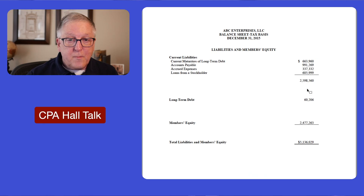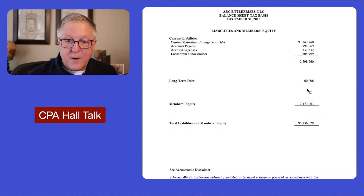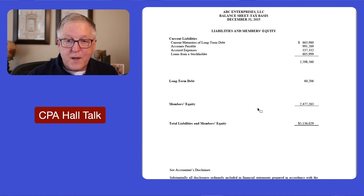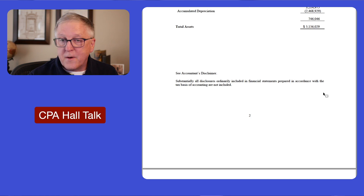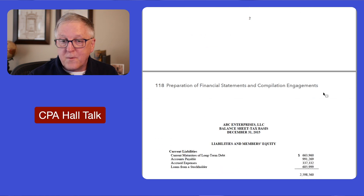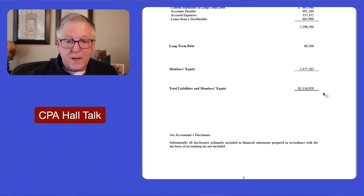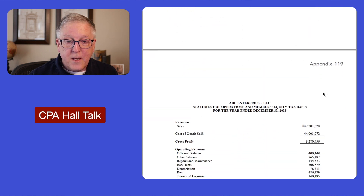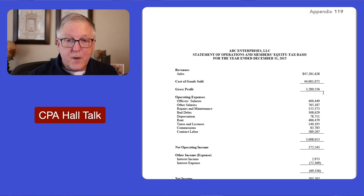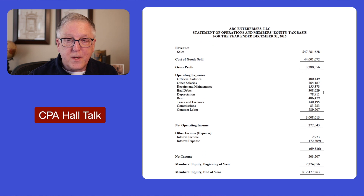Here's the second page of the balance sheet, and those numbers — total liabilities and members' equity — equal the total assets on the prior page. And there's the legend at the bottom of the page. Then we have a statement of operations and members' equity, tax basis.